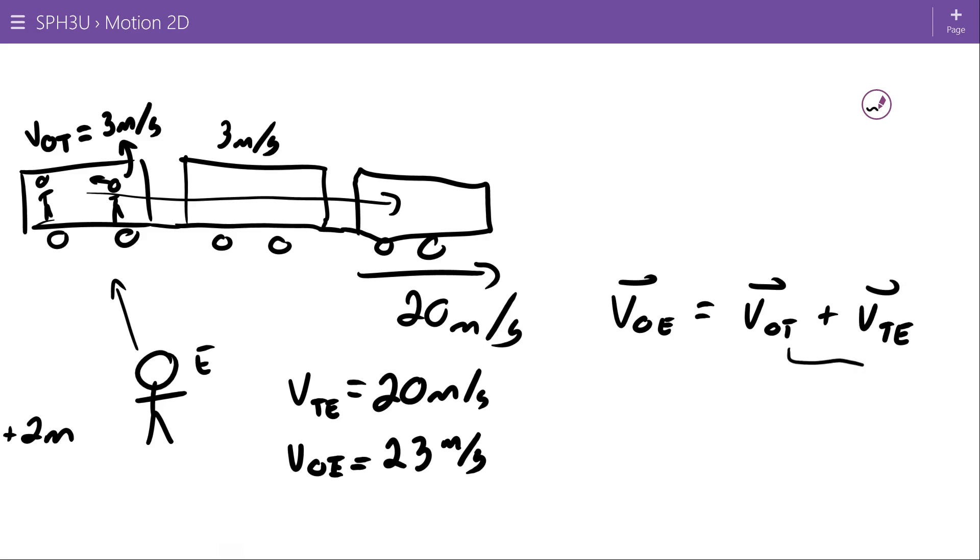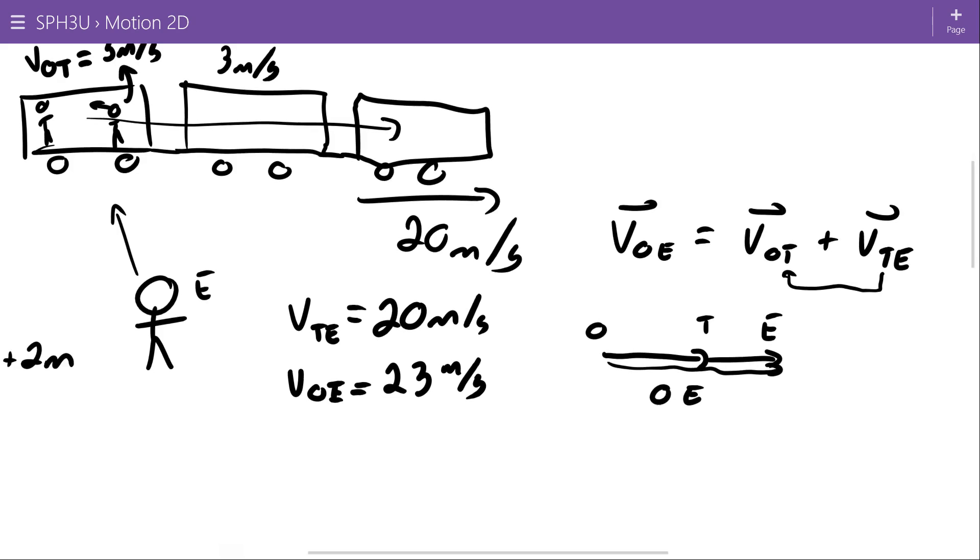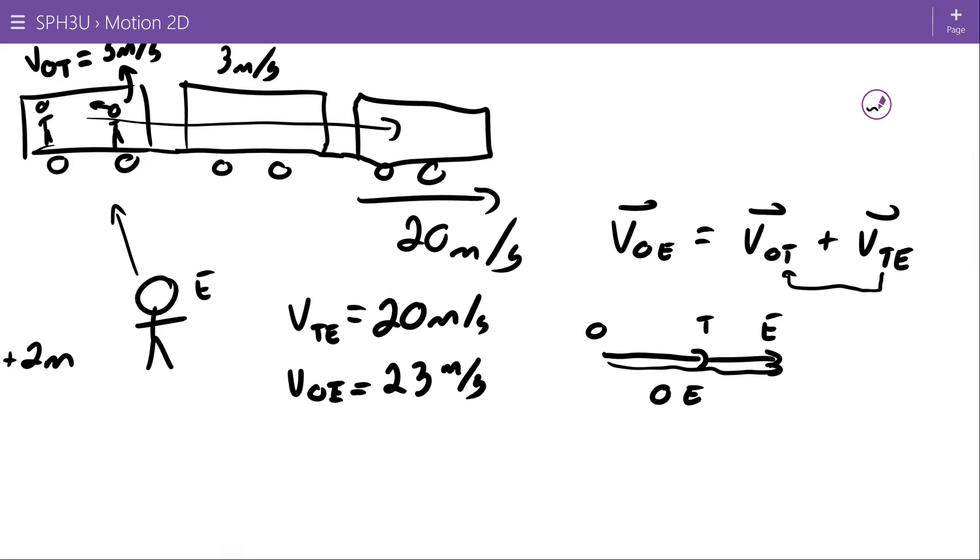And I think we can see through this illustration that the velocity of the object relative to the earth is equal to the velocity of the object relative to the train plus the velocity of the train relative to the earth. And for a simple fact here, we can see that these two letters are the same. If I were to do this in a vector scale diagram, I would say, if I call this point O and I call this point T and then I go to point E, then O to T and T to E is equal to O to E all the way across, right?